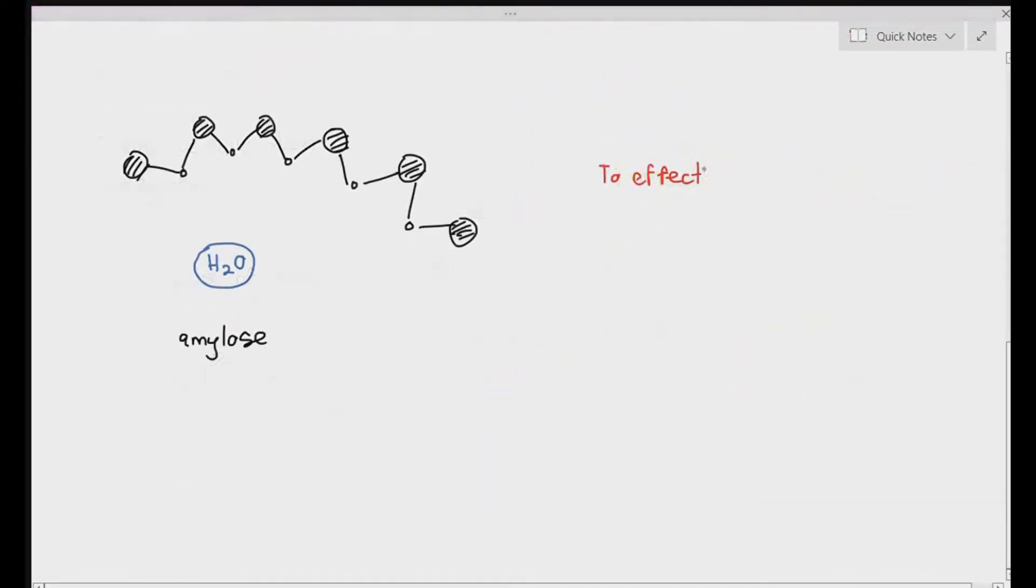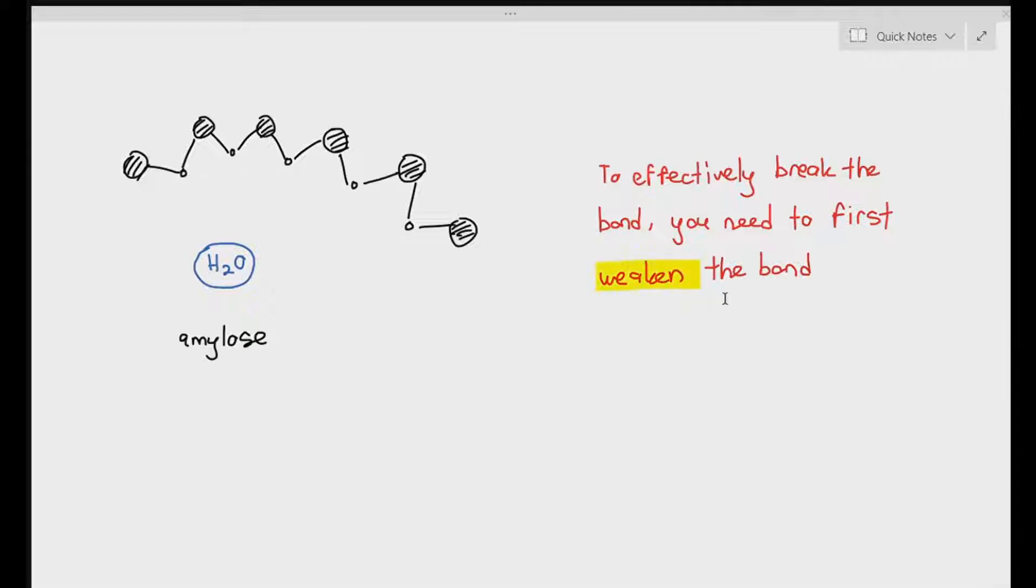You see, to effectively break the bond, you first need to weaken it. You need water to break the glycosidic bond, but the glycosidic bond is too strong. And by just adding water to the bond, it's not going to cut it. So the water needs to effectively collide with the glycosidic bond at an extremely high energy level.